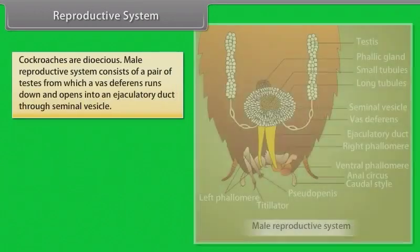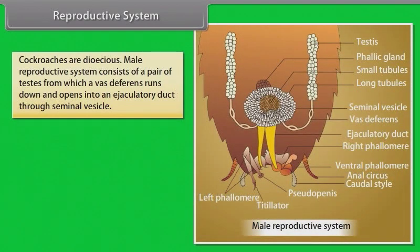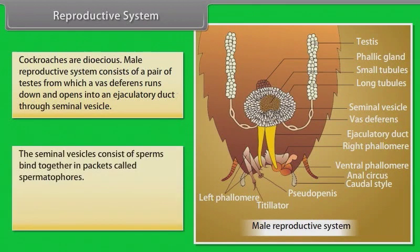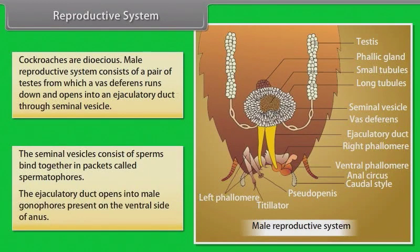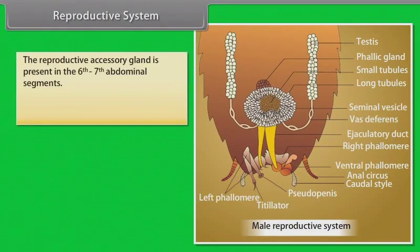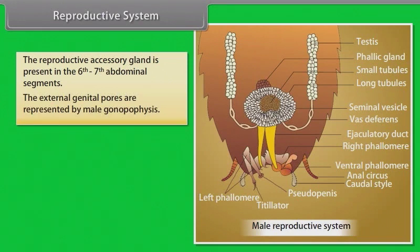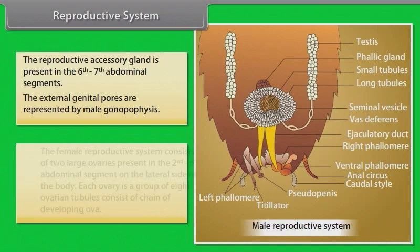Reproductive System. Cockroaches are dioecious. The male reproductive system consists of a pair of testes, from which a vas deferens runs down and opens into an ejaculatory duct through a seminal vesicle. The seminal vesicles consist of sperms bound together in packets called spermatophores. The ejaculatory duct opens into male gonopore present on the ventral side of the anus. The reproductive accessory gland is present in the sixth and seventh abdominal segments. The external genital pores are represented by male gonapophysis.